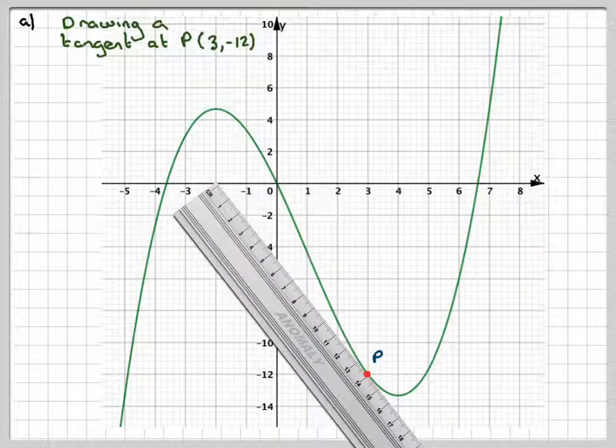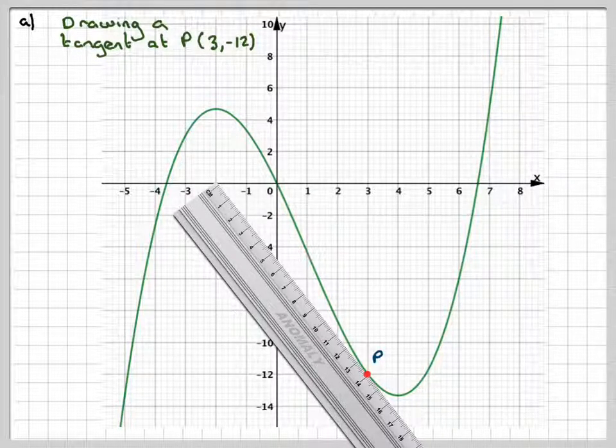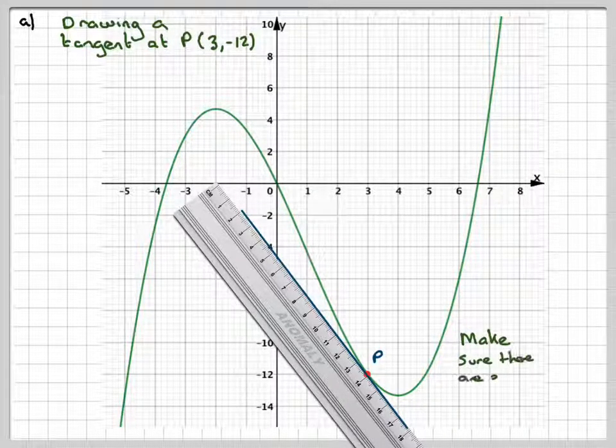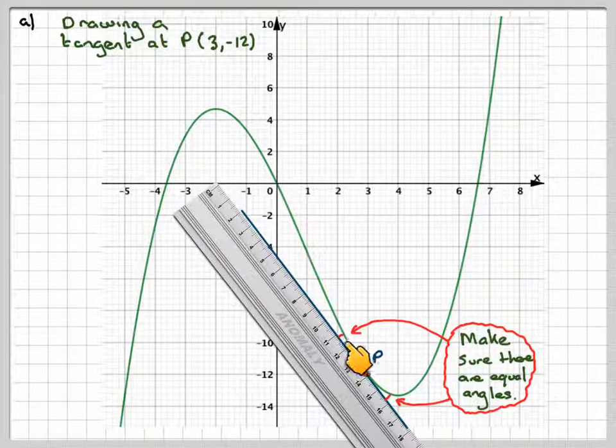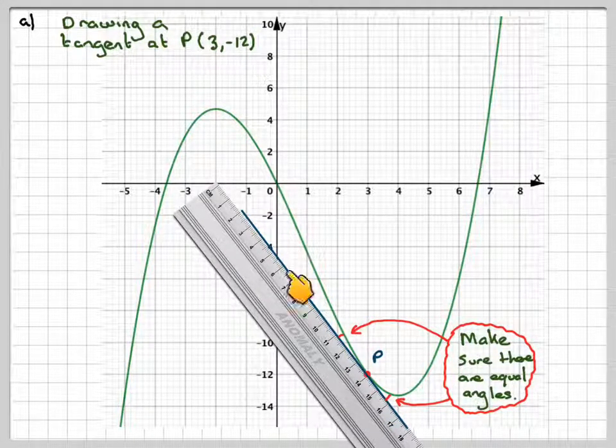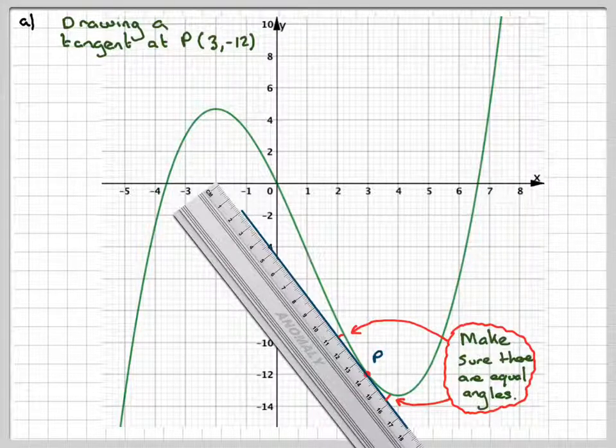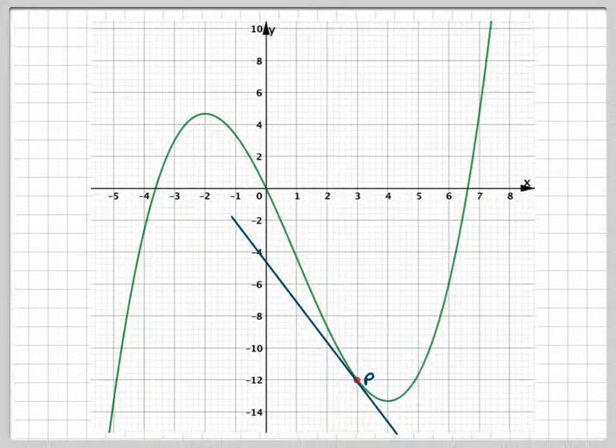Remember this is quite difficult to do. So you place your ruler at p and you need to make sure that you have an equal angle here and an equal angle here. And then you draw your tangent. Okay, that should look like that.